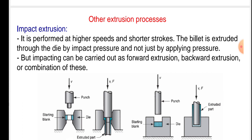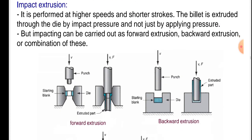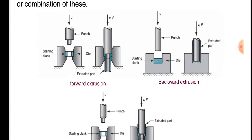Impacting can be carried out as forward extrusion, backward extrusion, or combination of these, which is shown in the figure below. The starting blank is given in the figure.